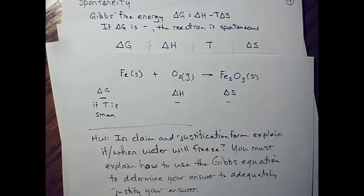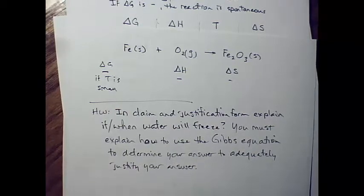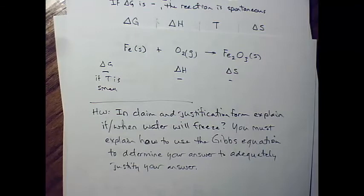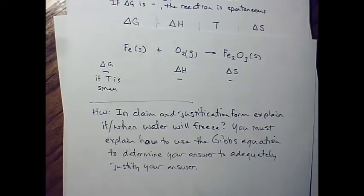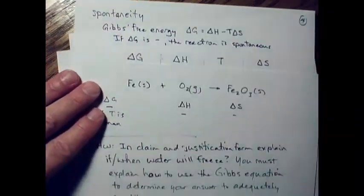In claim-justification form, you need to explain if and when a reaction is spontaneous. You have to explain how to use the Gibbs equation to determine your answer — the Gibbs equation and all of its terms must be part of your justification.